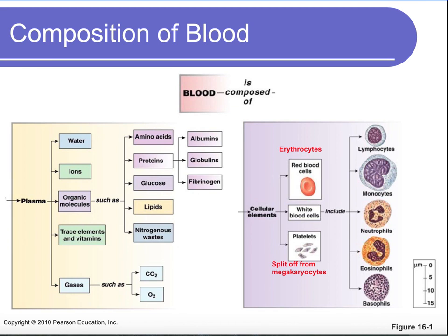Our blood is made up of plasma and cellular elements. The cellular elements would be our blood cells: red blood cells, also known as erythrocytes; white blood cells, also known as leukocytes; and platelets. Platelets are formed from pieces essentially breaking off of these big cells called megakaryocytes.